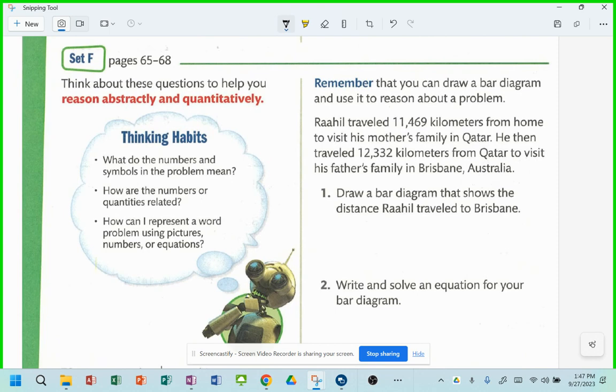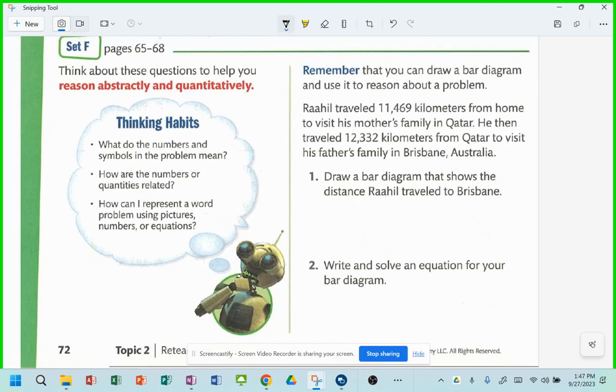What do these people do for a living, huh? All right, draw a bar diagram that shows the distance that Raheel traveled to Brisbane. I'm going to do something like what they did before.